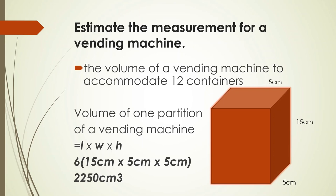Estimate the measurement for a vending machine. The volume of a vending machine to accommodate 12 containers should be measured as 1 partition. One partition of the vending machine carries 6 containers. So volume of 1 partition equals length times width times height: 6 times 15 centimeters times 5 centimeters times 5 centimeters equals 2,250 cubic centimeters.